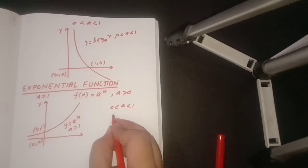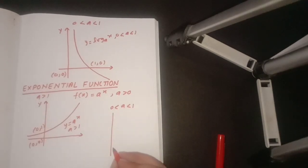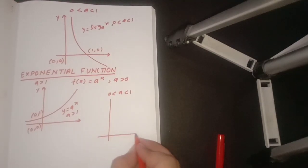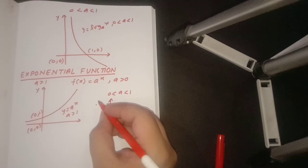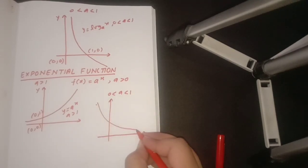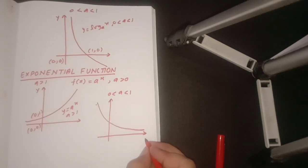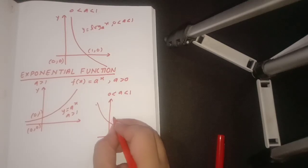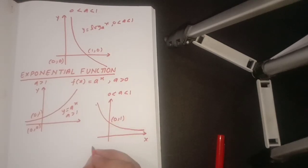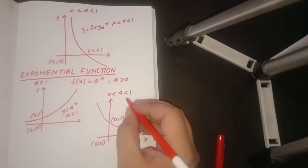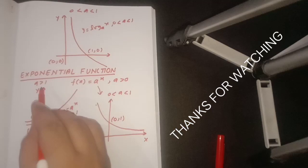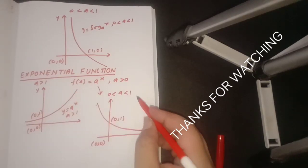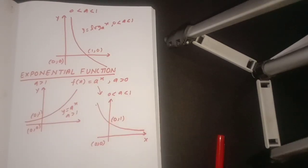When a lies between 0 and 1, the graph takes another form — it is a decreasing curve. The point (0, 1) is again marked. So this covers both forms of the graph of a^x: in the first case a > 1, and in the second case a lies between 0 and 1.